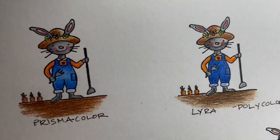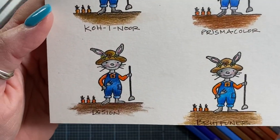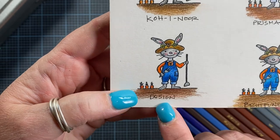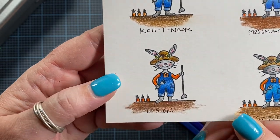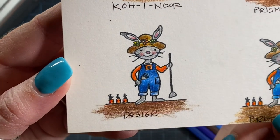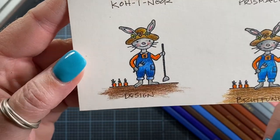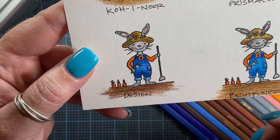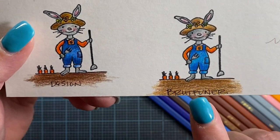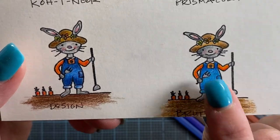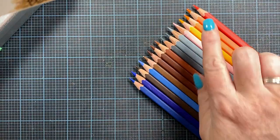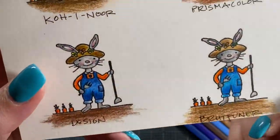And then I used my Design Spectracolor. And those are pencils I've had since college, when I was taking art classes. And I love those pencils. They're probably my absolute favorite. Then I used the Brutfurners, and this is where I colored the bunny using these pencils before they were sharpened. They were just factory sharpened down to that square.